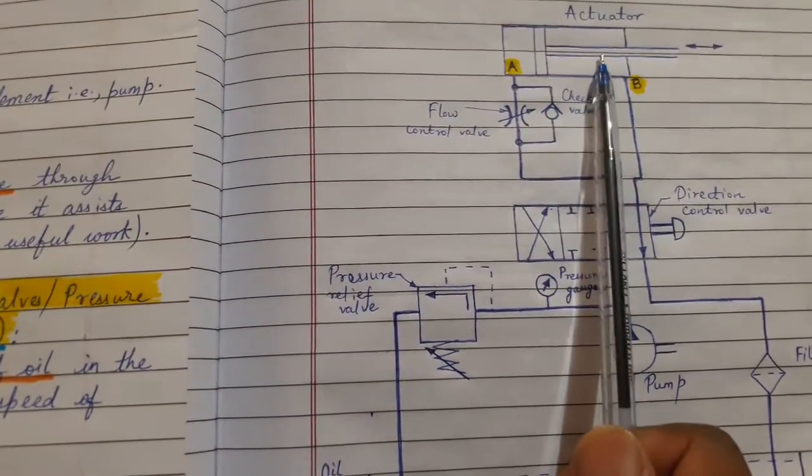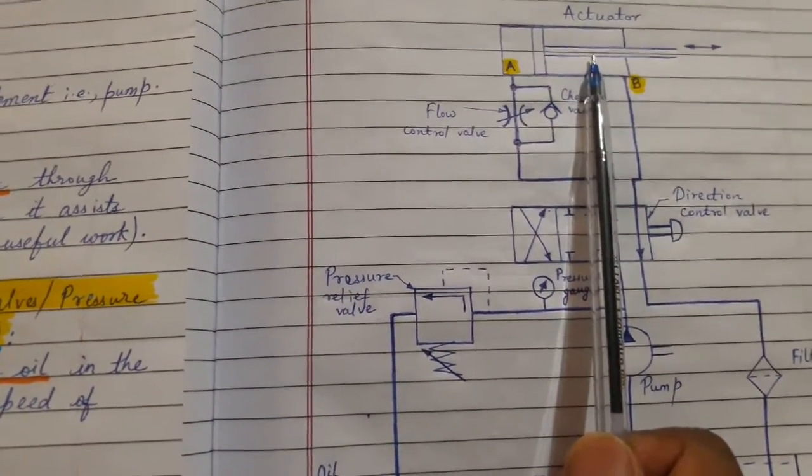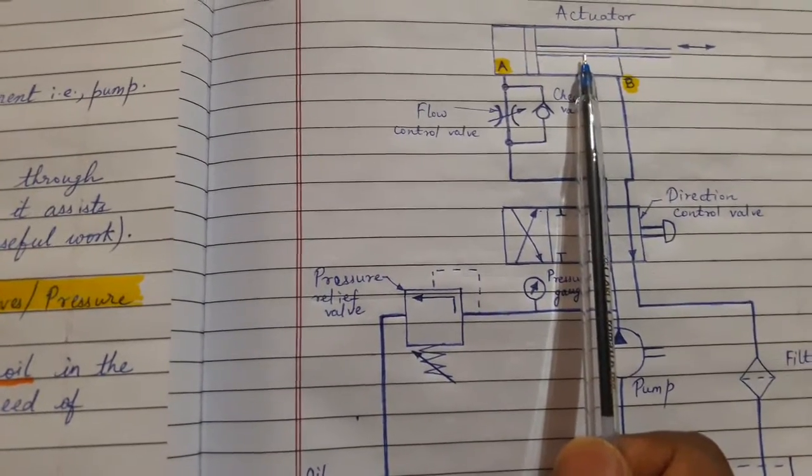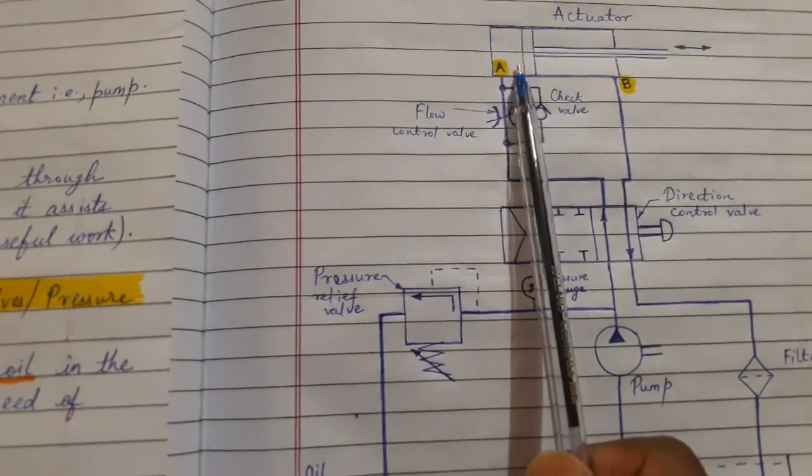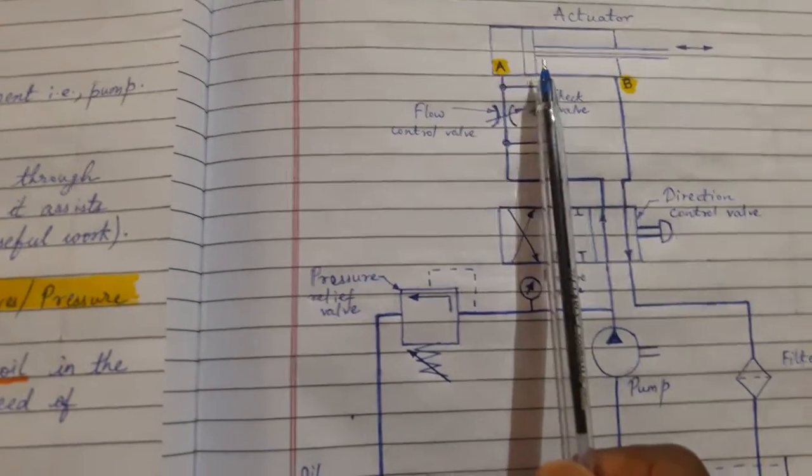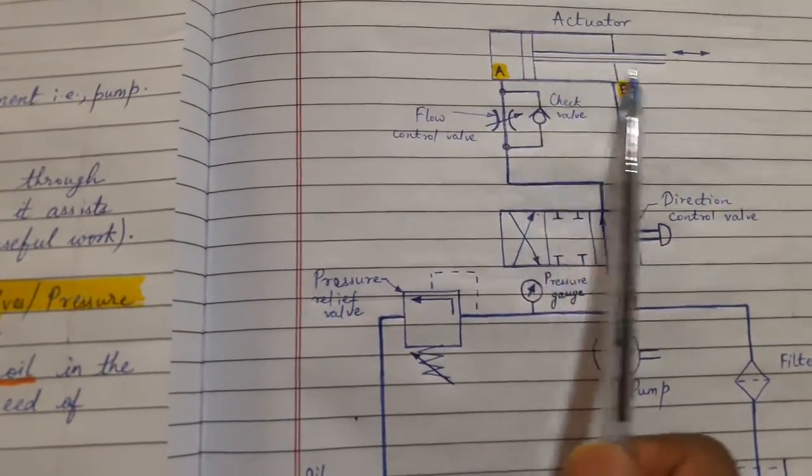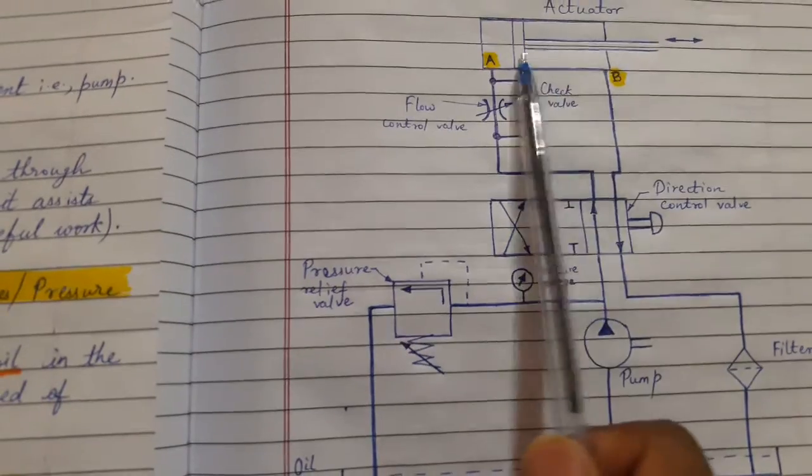Now regarding the actuator function, actuator can be called as fluid power utilization element. The oil gives or transfers its power to actuator to create useful work or mechanical functional advantage.